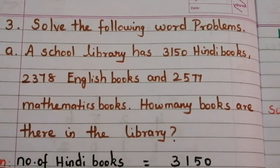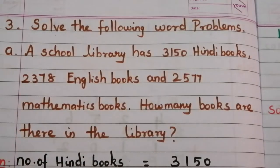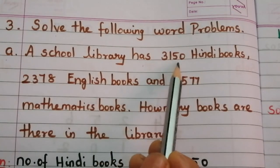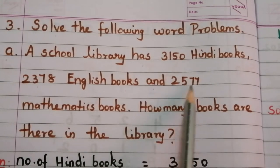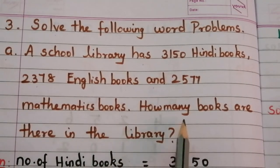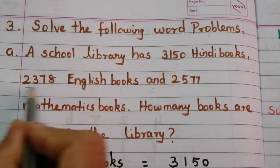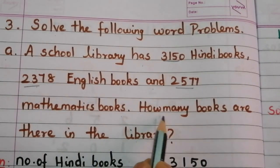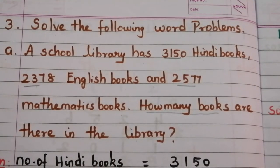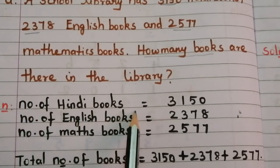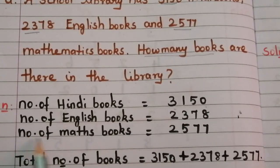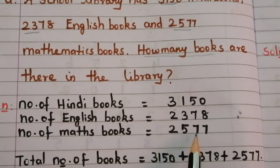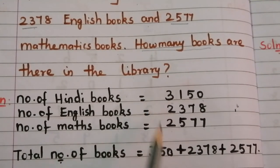Story problems — Solve the following word problems. Problem A: A school library has 3,150 Hindi books, 2,378 English books, and 2,577 mathematics books. How many books are there in the library? The given data are those three values, and we need to find the total number of books using the addition operation.